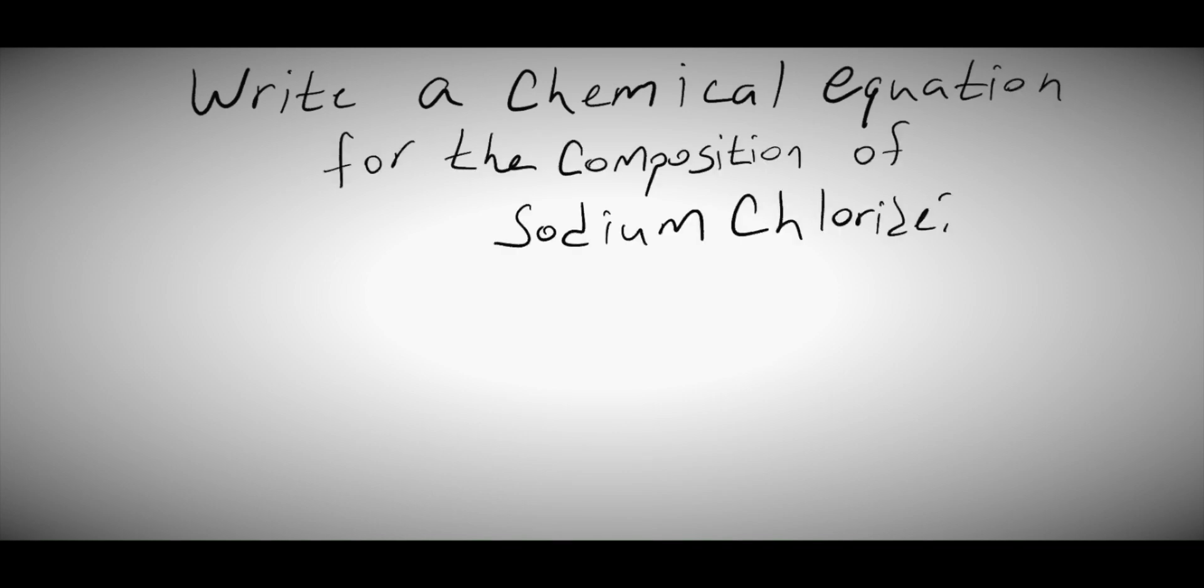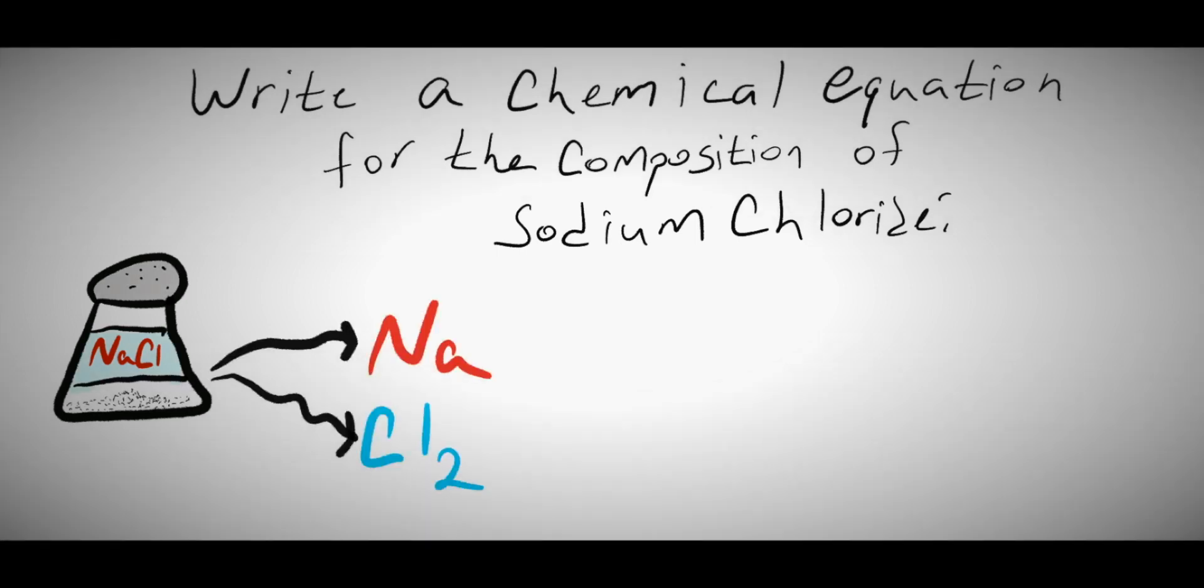The first step is to determine what is my product. Well, sodium chloride is NaCl. I can construct the backbone of my chemical equation now by saying sodium plus chlorine is sodium chloride. Remember, chlorine is diatomic.